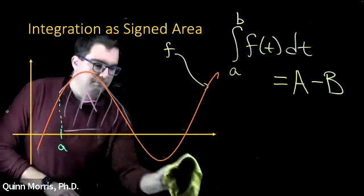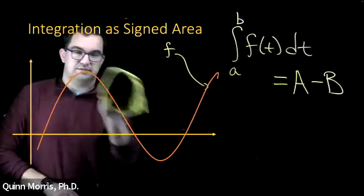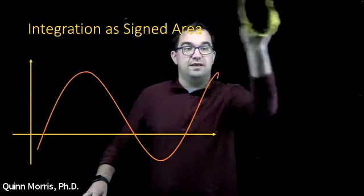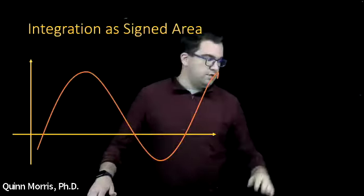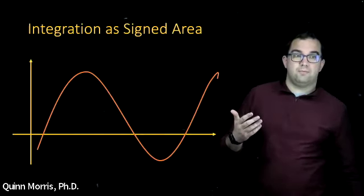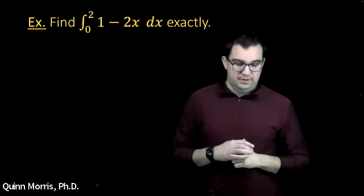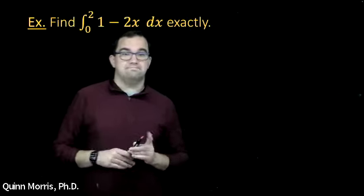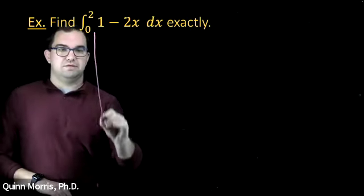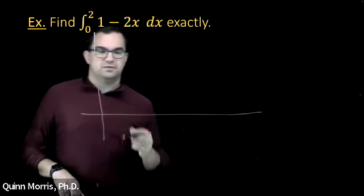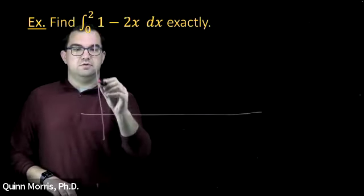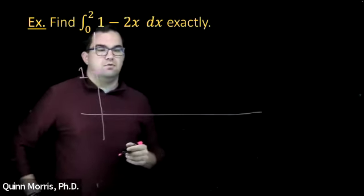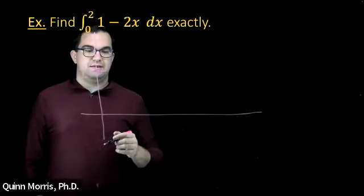Now we want to understand how to compute these things. Much of the first part of this course will focus on computing definite integrals. So imagine you were asked to find the integral from 0 to 2 of 1 minus 2x dx exactly. Thinking geometrically, this is a linear function with y-intercept 1 and slope negative 2, and we're going from 0 to 2.